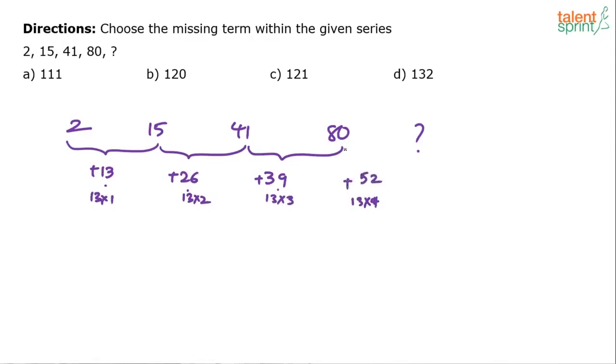So plus 52, right? 80 plus 52 will give you the question mark. So this should be 80 plus 52 which is 132. Option D will be the answer.